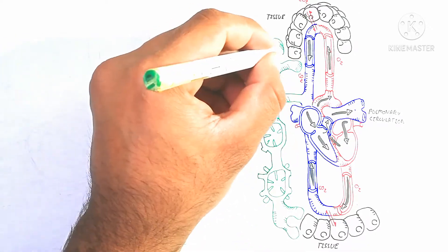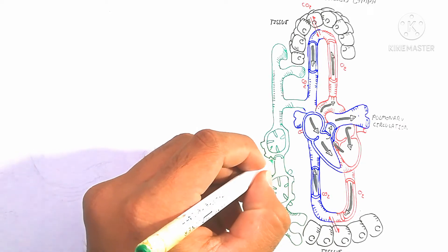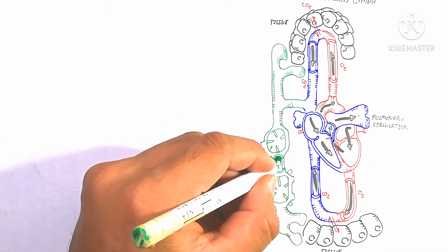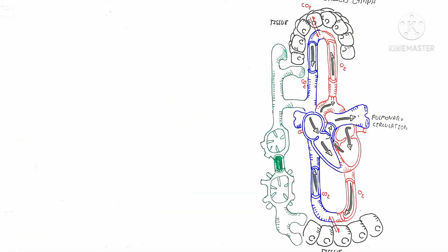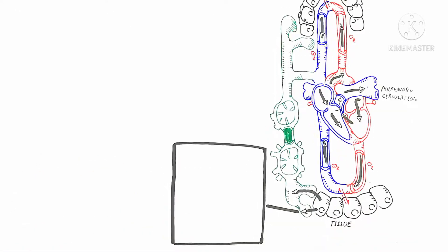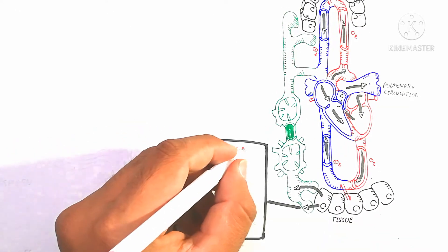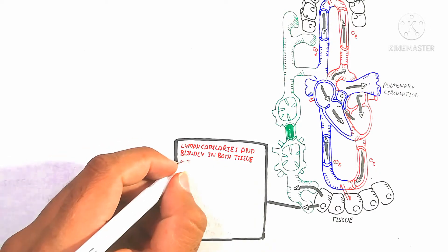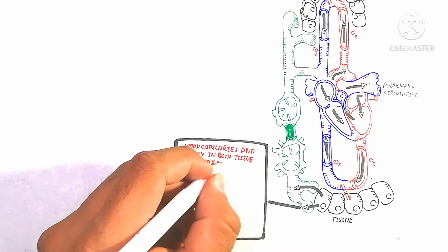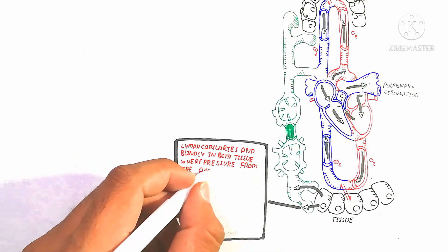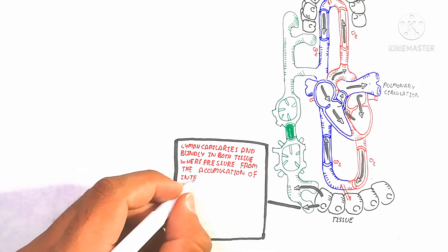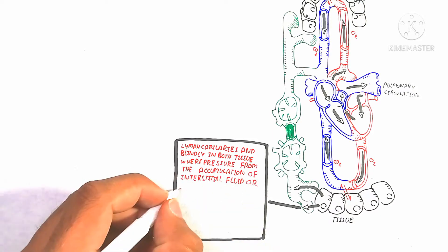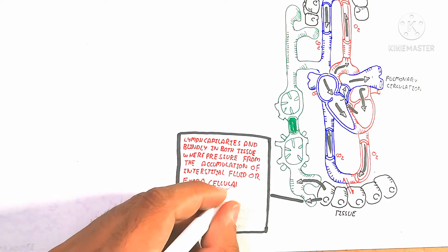Here I am drawing the lymphatic system — an easy diagram to understand. The lymphatic capillary is not completely attached; there is a synapse-like gap structure. It is basically a single-cell endothelium containing lymphatic vessel — a lymphatic capillary. There are junctions present where tissue gives extracellular and intracellular fluid to maintain homeostasis. The lymph capillary ends blindly in tissue, where pressure from accumulation of interstitial fluid forces the fluid into the lymph capillary.